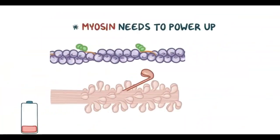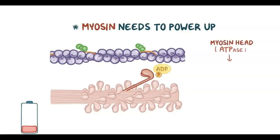Before myosin can bind actin, it first needs to power up. Part of the myosin head is an ATPase, meaning that it can cleave an ATP molecule to ADP and a phosphate ion, and release some energy. The energy is used to cock the myosin head backwards into its high-energy position.